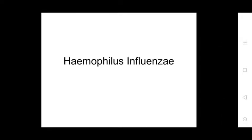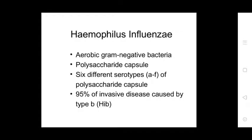Good morning students. Today's first news: Haemophilus influenzae. It is an aerobic gram-negative bacteria with polysaccharide capsules, six different serotypes A to F. 95% of invasive disease is caused by type B (Hib). It is a gram-negative polymorphic cocobacillus known to colonize the nasopharynx in unimmunized populations.